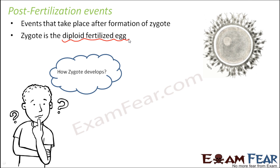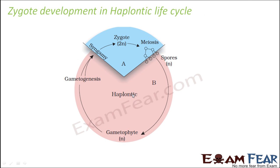Let us see how the zygote develops in a haplonic life cycle. When we spoke about the alternation of generations, certain plants have a life cycle where the haploid phase is more dominant — they are called haplonic. In the diagram, the pink shade denotes the haploid stage. Most of the time it is in the haploid phase, and comparatively for lesser time it is in the diploid state, marked in blue.